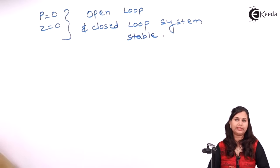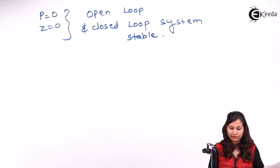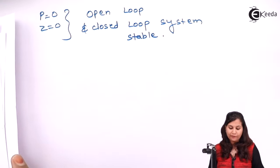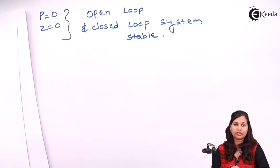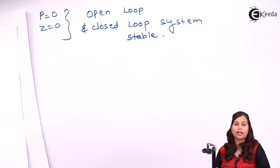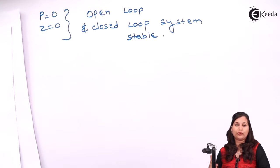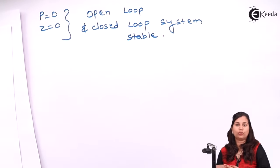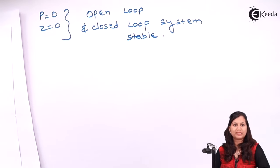Both open loop and closed loop stability is present for this system. To summarize: whenever we solve a Nyquist plot problem, first put s equals j-omega in the transfer function, obtain the magnitude and phase angle conditions, draw a table varying frequency from 0 to infinity, draw the polar plot and its mirror image to get the Nyquist plot, then use N equals P minus Z to check stability by observing encirclements of the minus 1 plus j0 point.